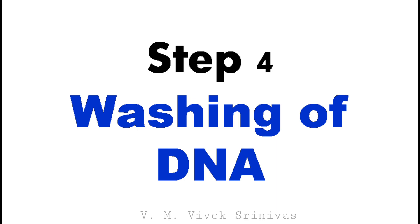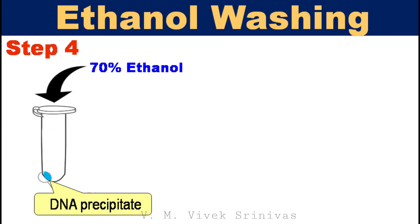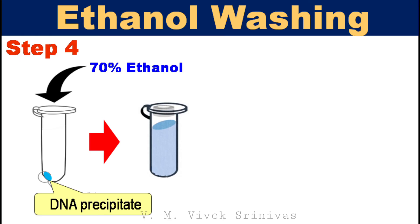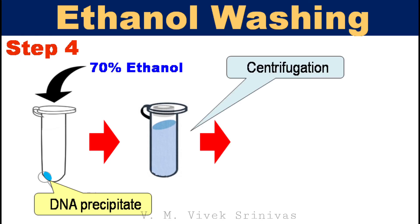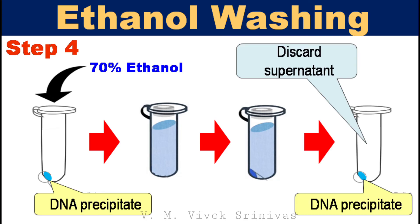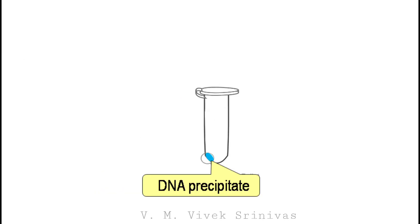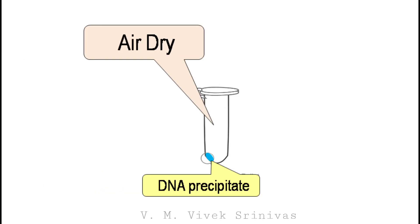Step 4: Washing of DNA using 70% ethanol. This step ensures the purity and quality of the nucleic acid. Add 1 ml of 70% ethanol and mix gently by inversion. Then centrifuge at 5,000 RPM for 10 minutes to precipitate the DNA. Following precipitation, discard the supernatant. The washing step can be repeated once or twice to ensure purity and quality of the nucleic acid. After discarding the ethanol supernatant, air dry for 5 minutes.